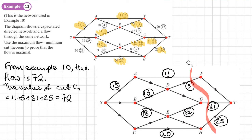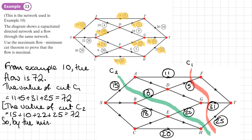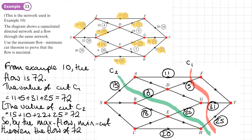There is actually another valid cut through different arcs, called C2. The value of cut C2 = 15 + 10 + 22 + 25, and all of these arc flow into the cut, also giving a value of 72. So by the max flow min cut theorem, the flow of 72 — as found in example 10 — is maximal.